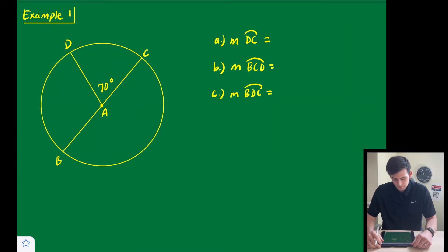So example one, we're going to find three arc measures here. The first one just says find the measure of arc DC. So DC is right here, and that is a minor arc whose central angle is 70 degrees, so it will also be a 70 degree arc.